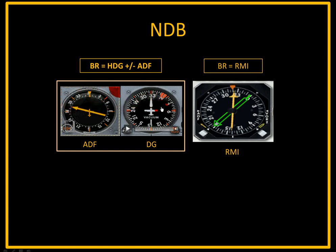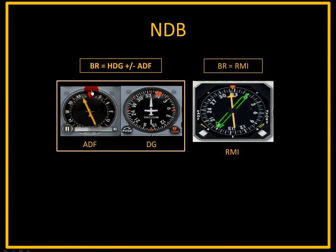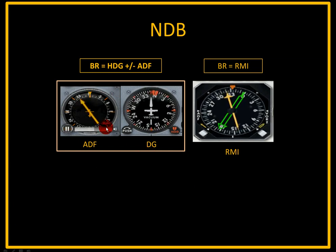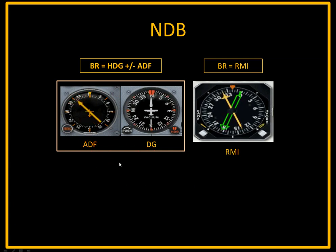Now let's look at the difference between the two instruments in action. Here you can see we're turning — notice the fixed card is always pointing to north, and as we turn, the ADF needle is pointing in a direction but doesn't tell us what our heading is. The RMI, on the other hand, tells us exactly what heading we should turn to directly.